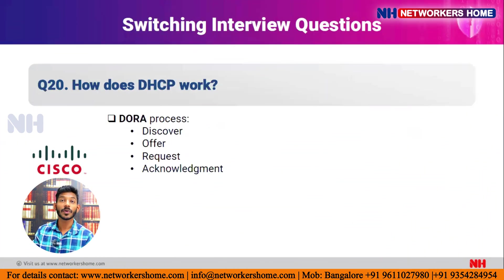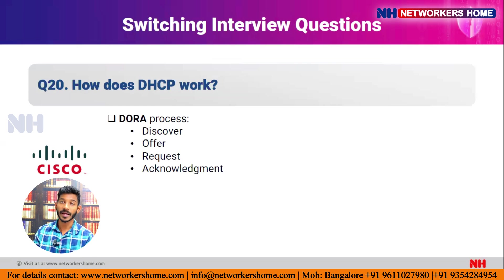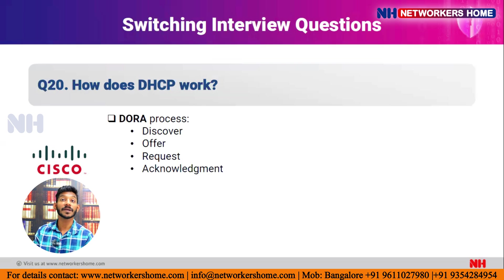Question nineteen: how does DHCP work? DHCP works through the DORA process — Discover, Offer, Request, and Acknowledgement. In Discover, the PC broadcasts to find the DHCP server. In Offer, the DHCP server offers an IP and parameters. The PC performs a Gratuitous ARP to check for duplicate IPs, then sends a Request. Finally, in Acknowledgement, the PC receives the IP address, subnet mask, default gateway, and DNS server.